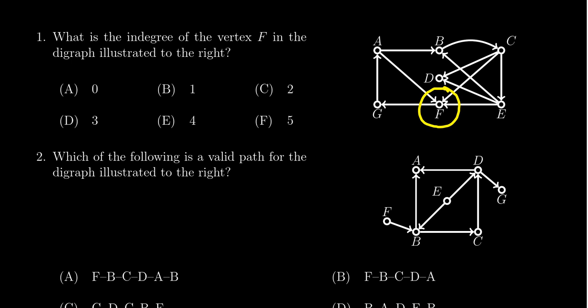While there is an edge leaving, that would be part of the out-degree. So for this vertex here, the in-degree is three because there are three edges coming into it.